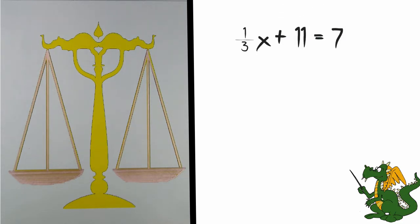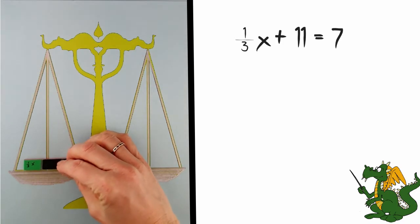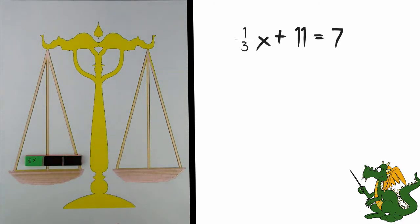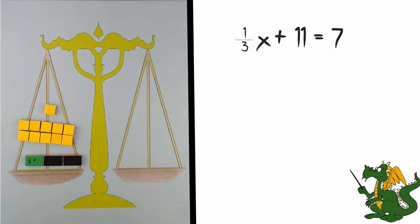To represent 1 third, I am going to literally have 1 third of an x. Then I will add positive 11 units to this side of the balance, and positive 7 units to the other.